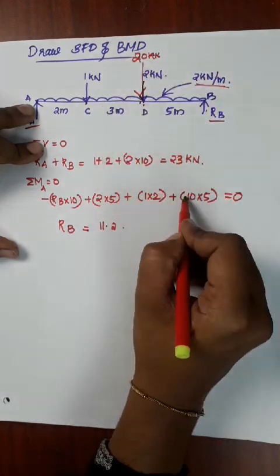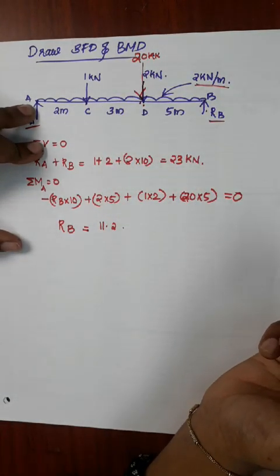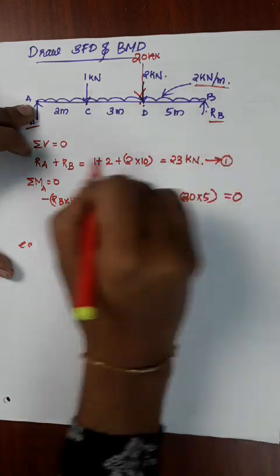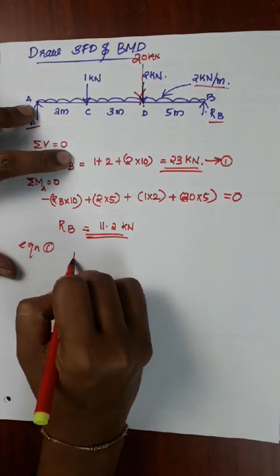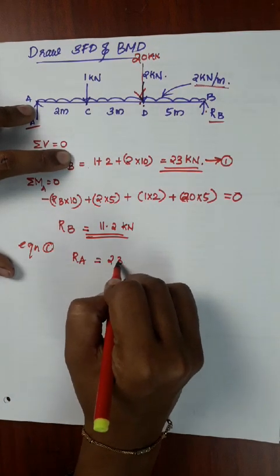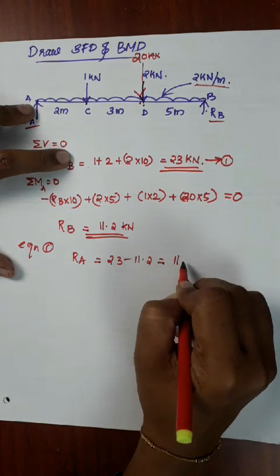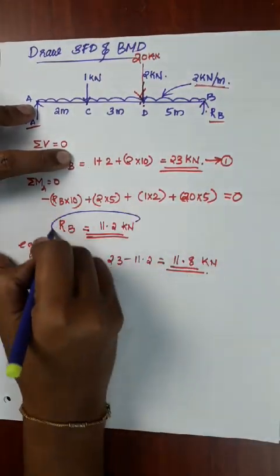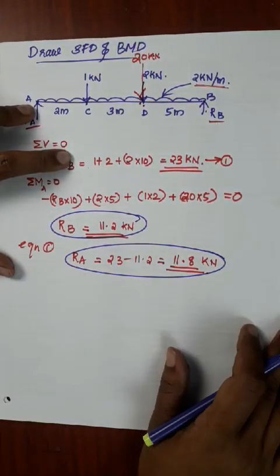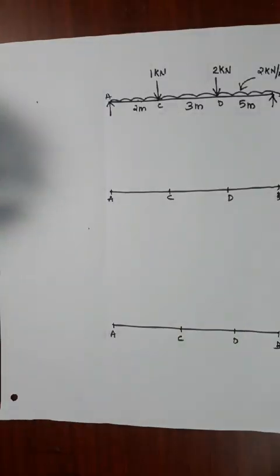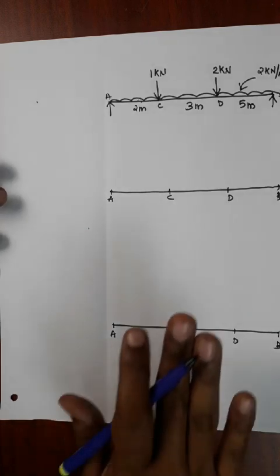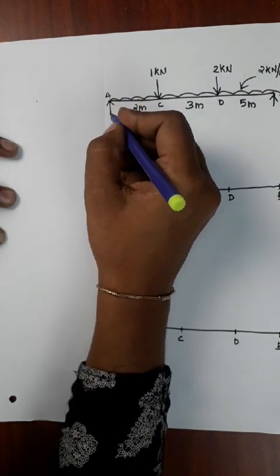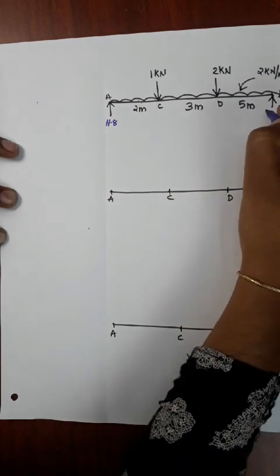The total load is 20 kN. RB is equal to 11.2 kN. From equation 1, RA plus RB equals 23, so RA equals 23 minus 11.2, which equals 11.8 kN. This is our first step — we now have RA = 11.8 kN and RB = 11.2 kN.